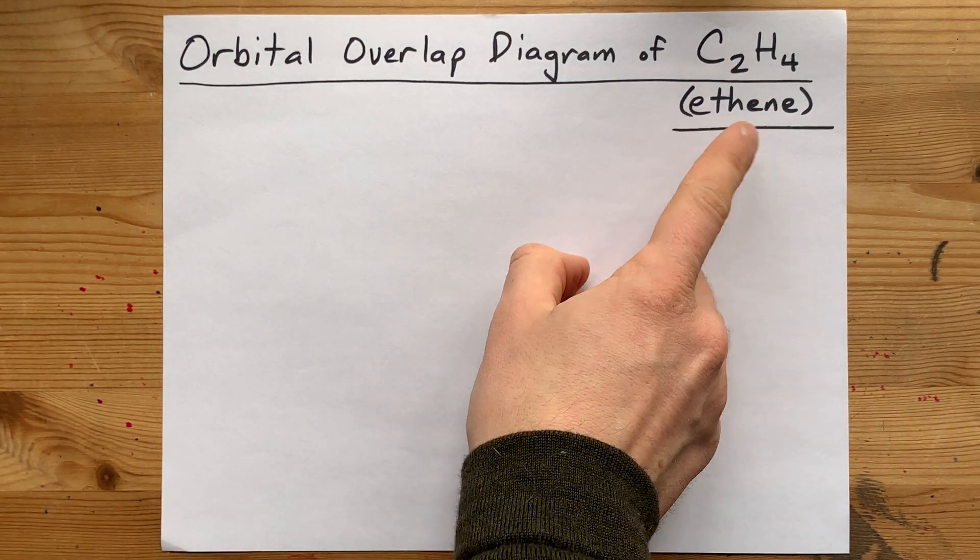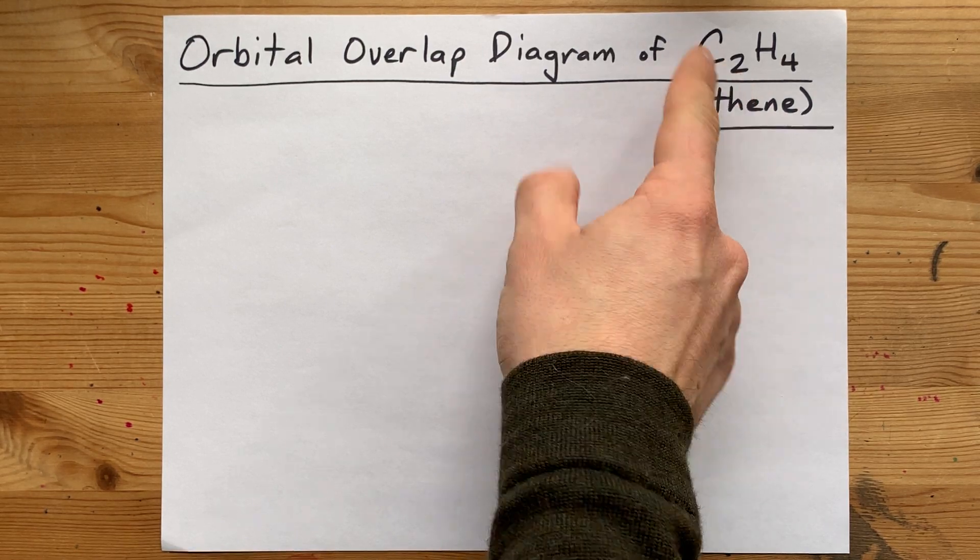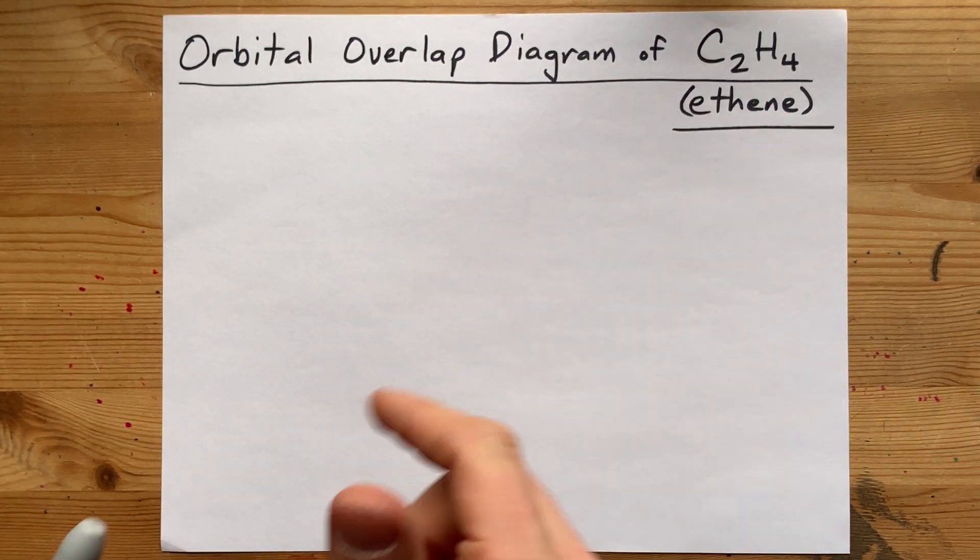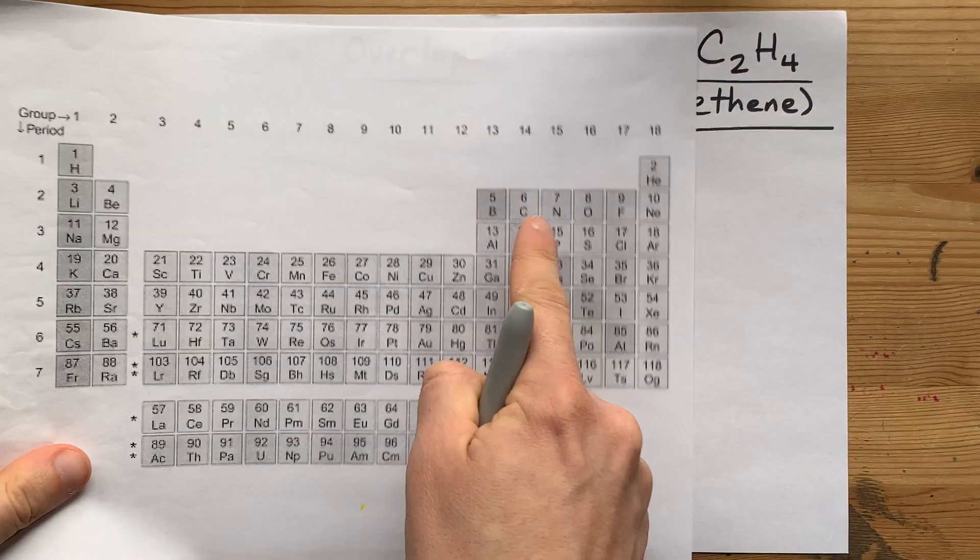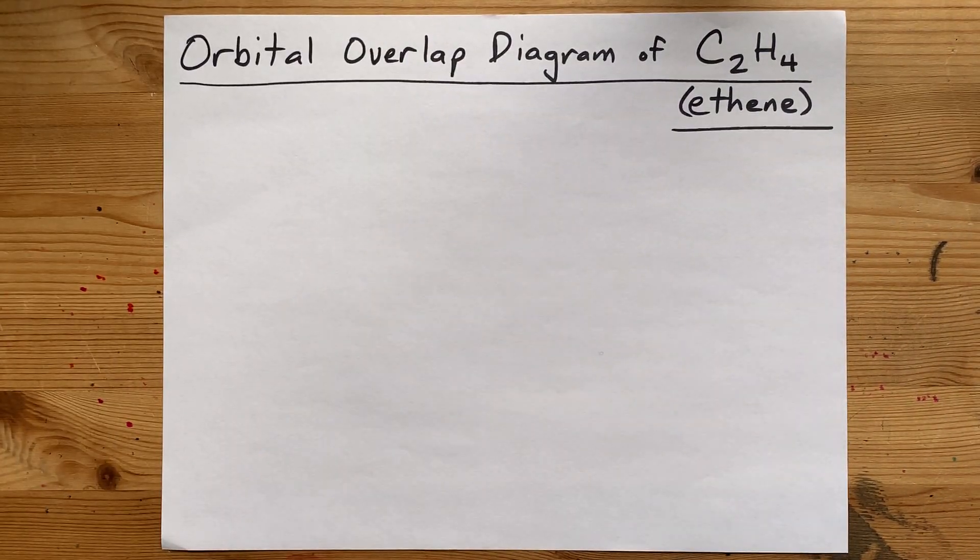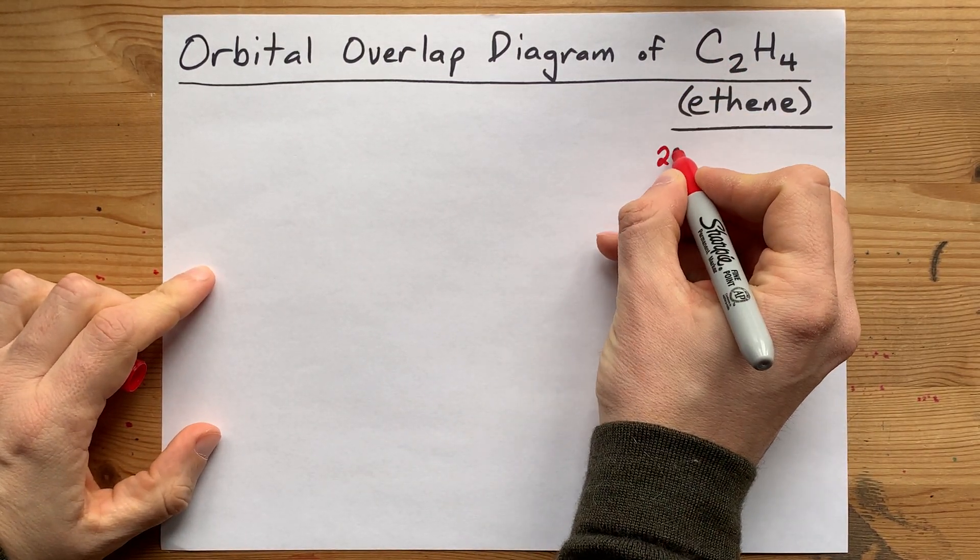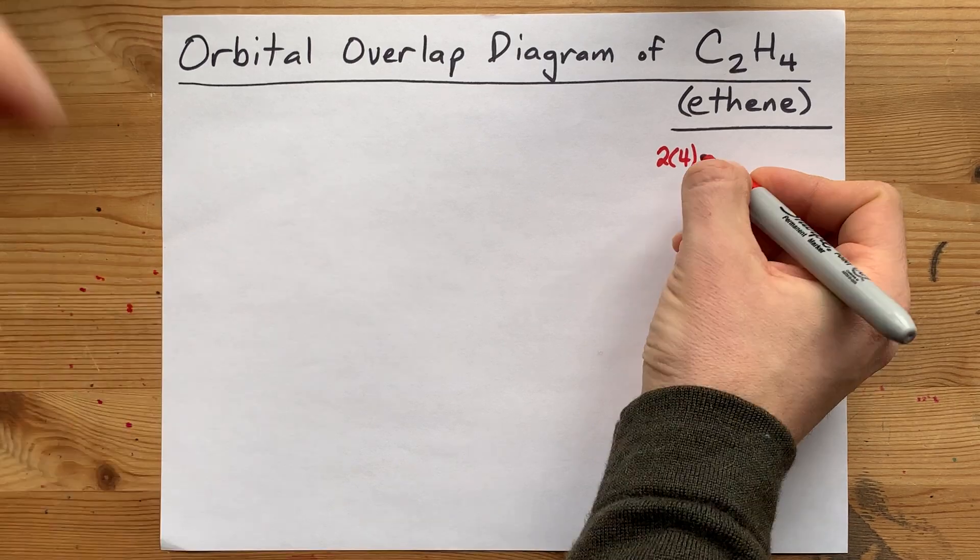Now, you may already know that the ene part of this name gives it a double bond between the two carbons, but let's say you didn't know that. Carbon, being in group 14 of the periodic table, brings four valence electrons with it, and there are two of them. So, that's eight valence electrons total.